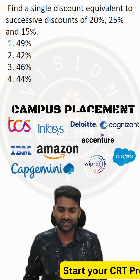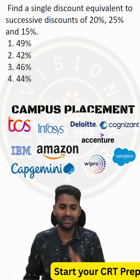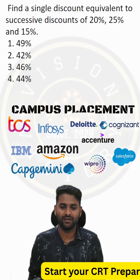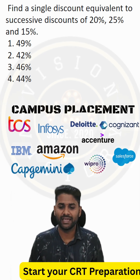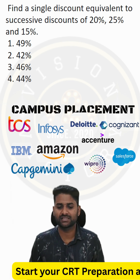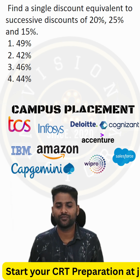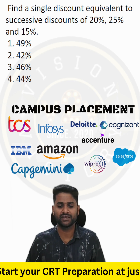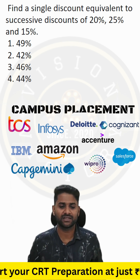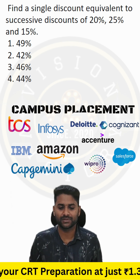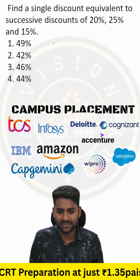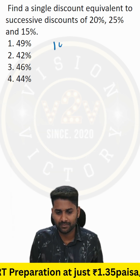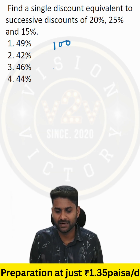Hi everyone, welcome back to my session. Let's see this question: find the single discount equivalent to the successive discounts of 20%, 25%, and 15%. Let us take the initial market price as 100.